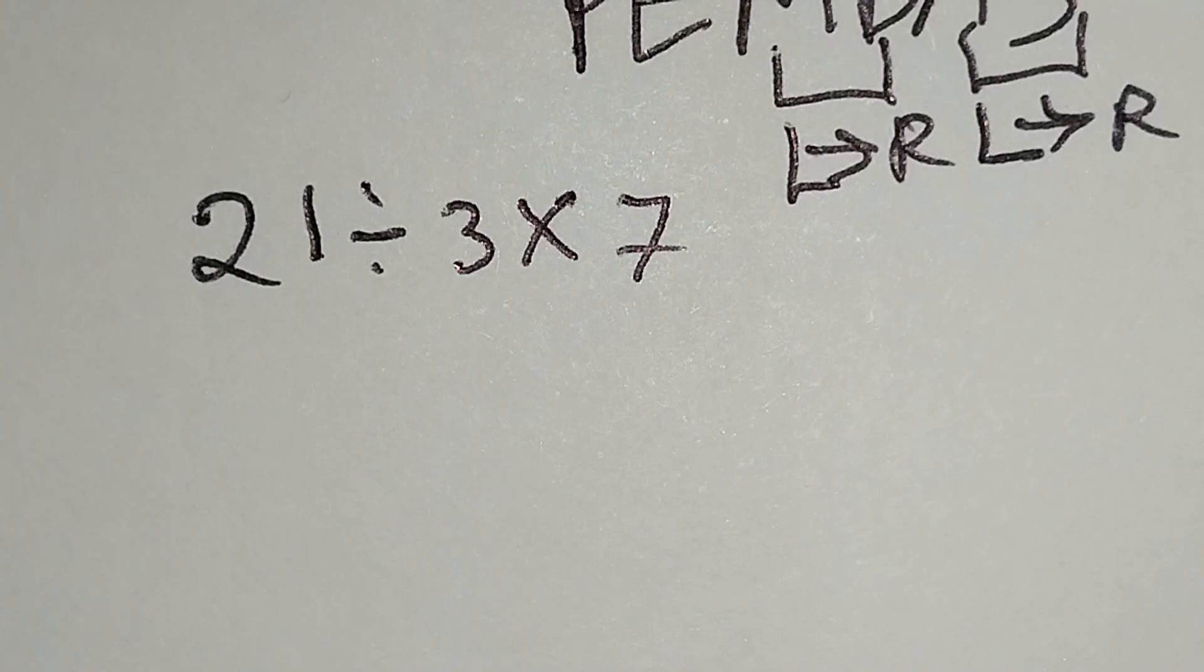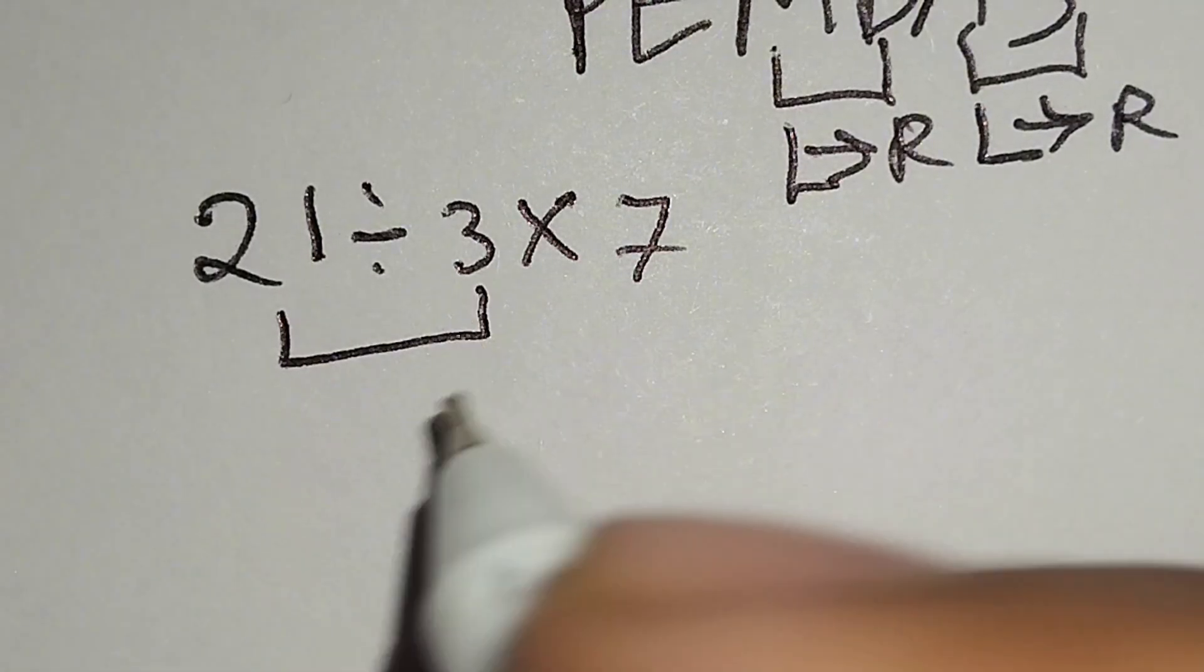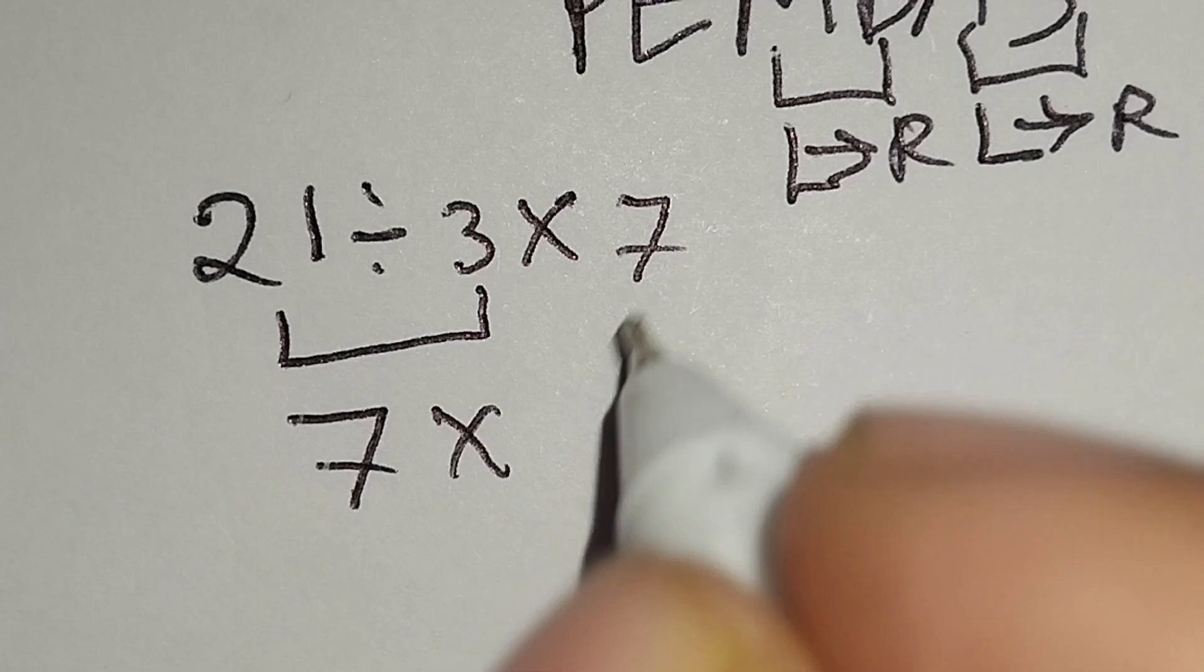Now I have to work with this division. 21 divided by 3 gives us 7, multiply this 7.